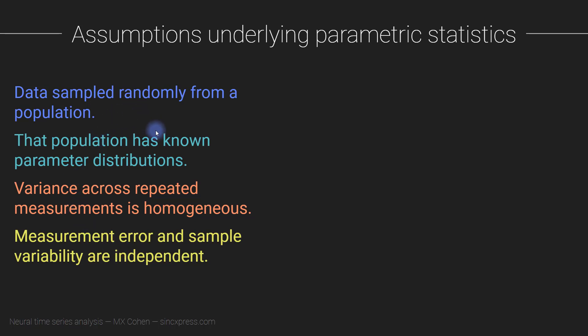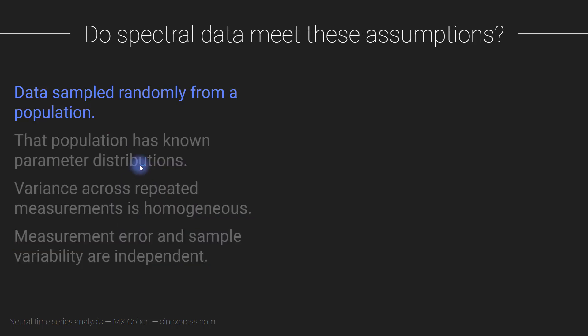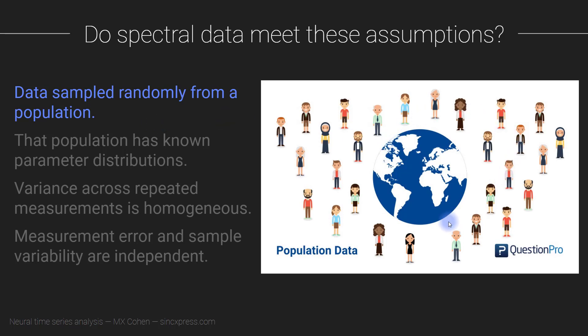Let's walk through each assumption and discuss whether spectral data — time-frequency or synchronization data — meets them. Starting with random sampling from a population: the population of humans is over seven billion people worldwide. Are you sampling randomly from that total distribution of humans?